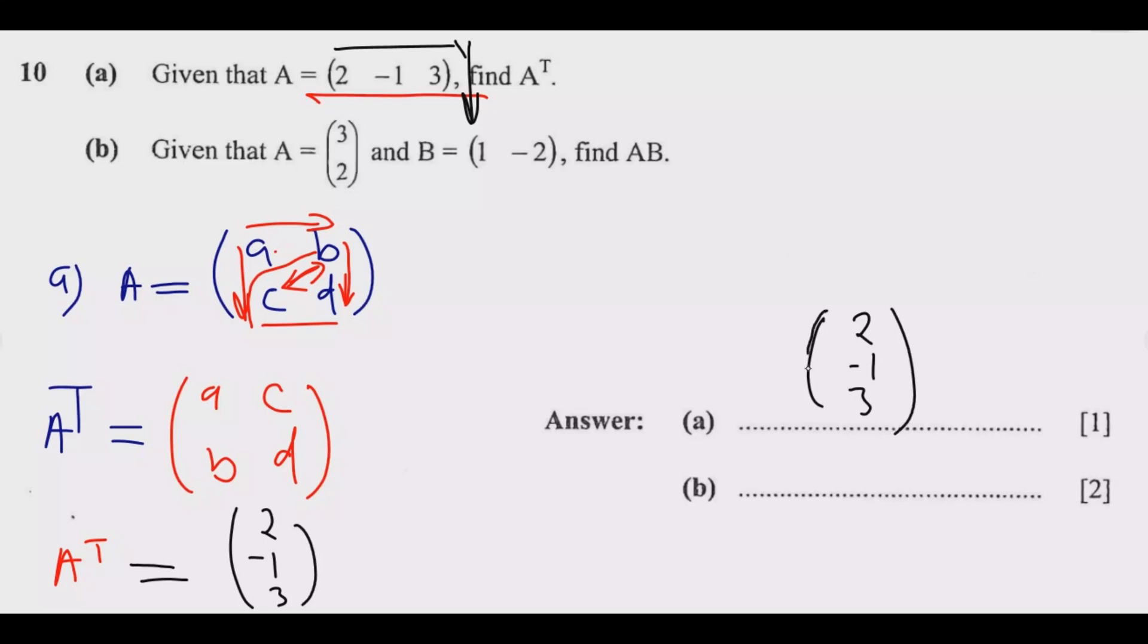This is the answer: (2; -1; 3). Once you do that, you get that one mark. The key principle is understanding this—once you understand the principle, everything becomes easier.